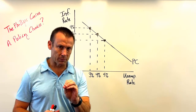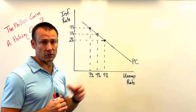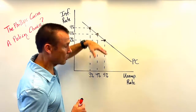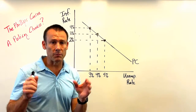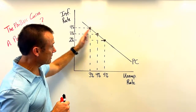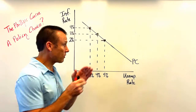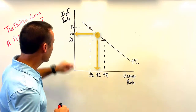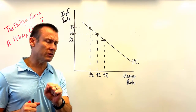Every country at any instance of time theoretically has a Phillips Curve, and that curve could be higher or lower. Let's say this is the Phillips Curve for the United States right now in November 2023. It shows the trade-off — the inverse relationship — between the unemployment rate and the inflation rate. We'll associate a 5% unemployment rate with 2% inflation, 4% unemployment with 3% inflation, and 3% unemployment with 4% inflation.